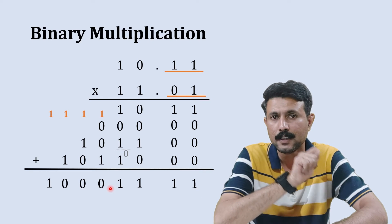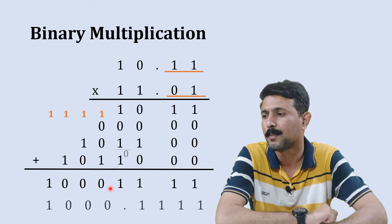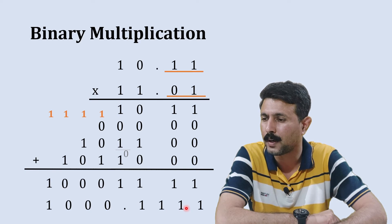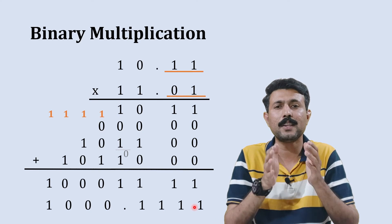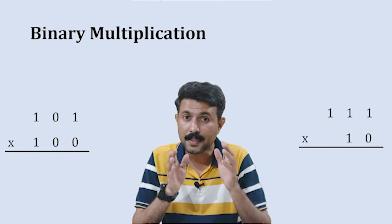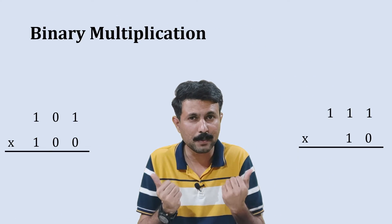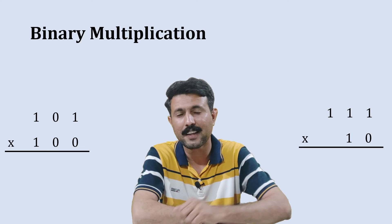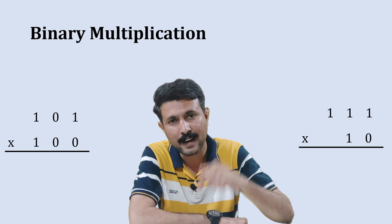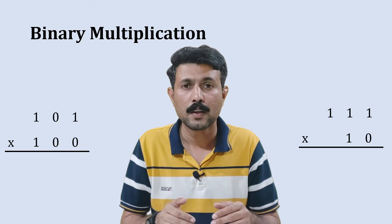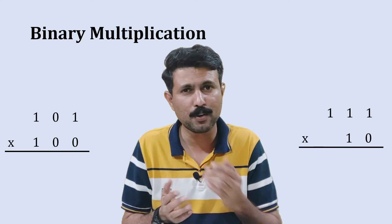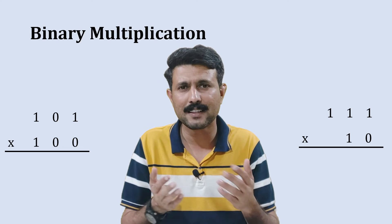So the answer of this binary multiplication is 1 0 0 0 . 1 1 1 1. You should solve both practice multiplications and write the answers in the comments below. If you find any difficulty, ask in the comments. For more topics on digital electronics, you can join the Telegram page.